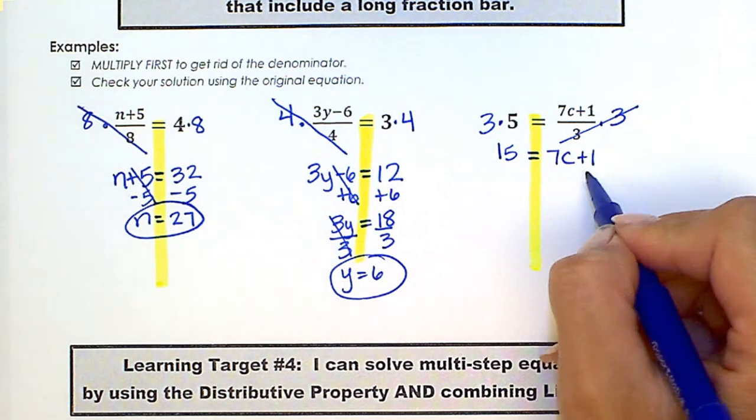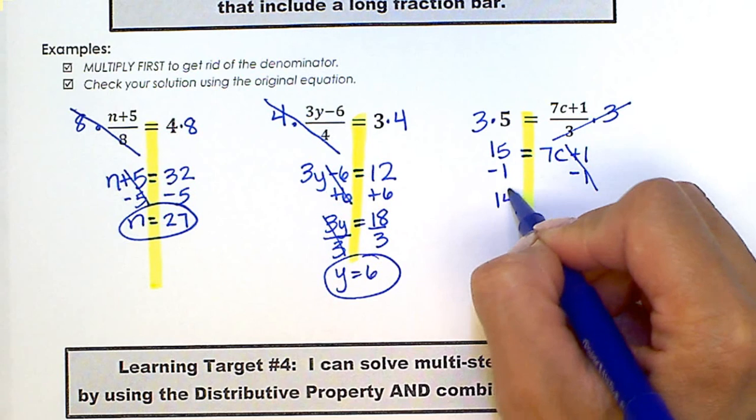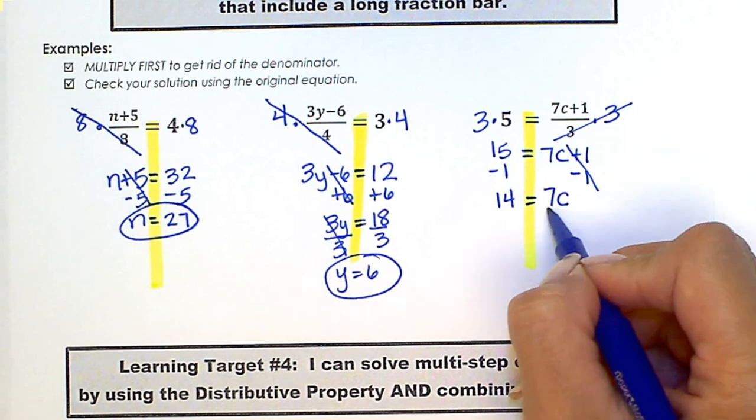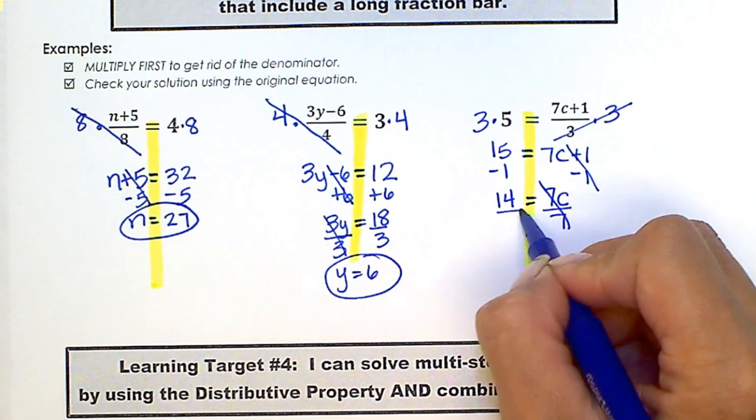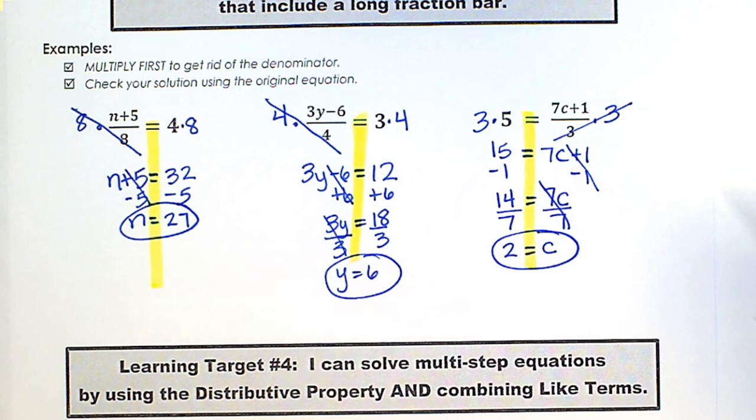Now we're going to subtract 1. We get 14 equals 7c. Divide by 7, and 2 equals c, or c equals 2.